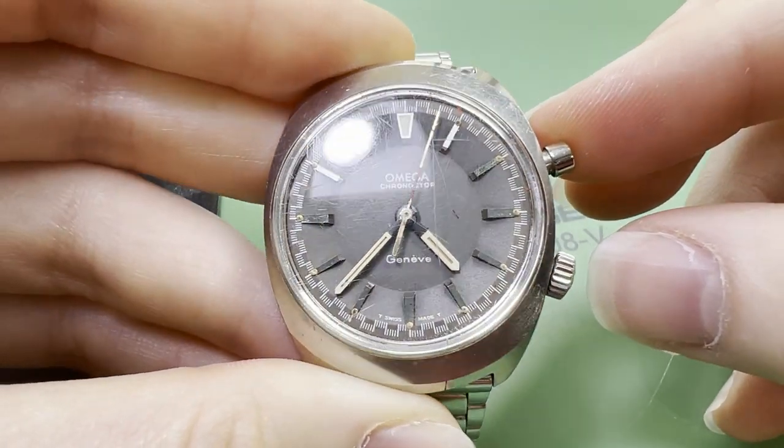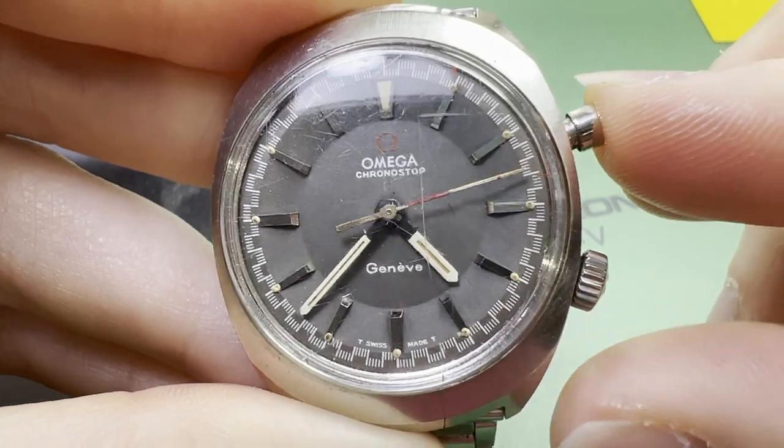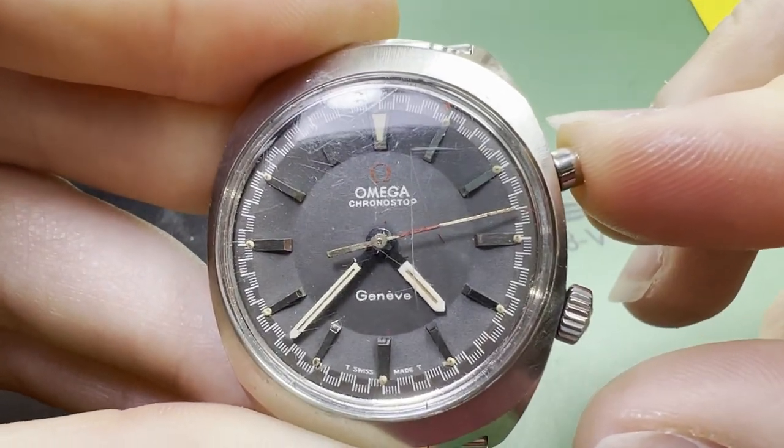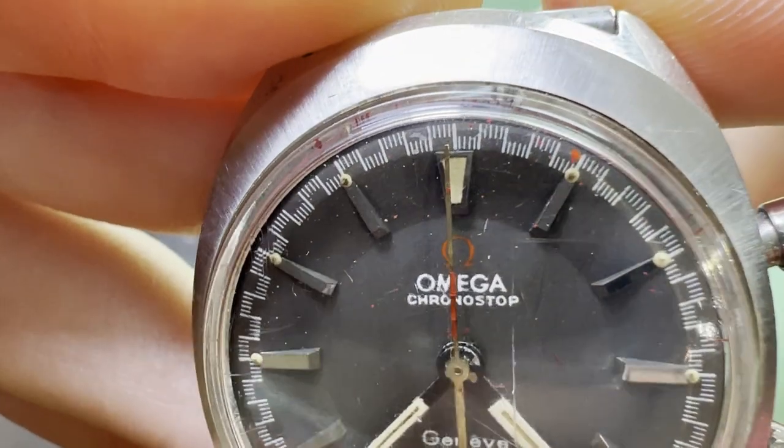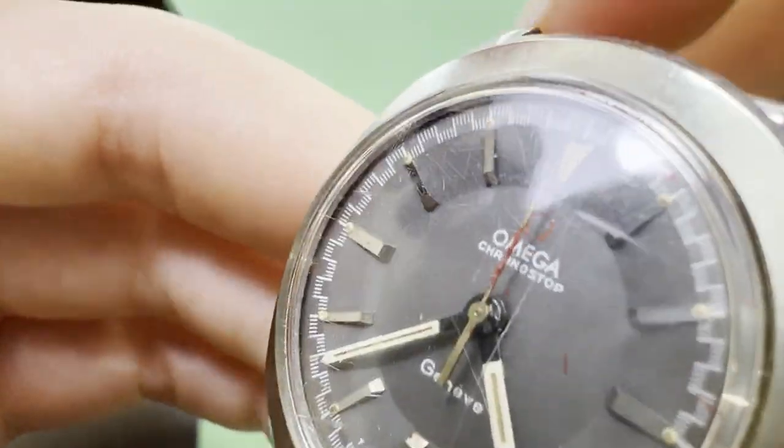After starting the chronograph mechanism, one can hold down the pusher to stop it and read the time, releasing the pusher then resets the chronograph. This watch is in a bit of rough shape and the seconds hand is a replacement that has shed its paint all over the dial.